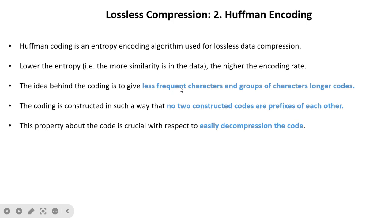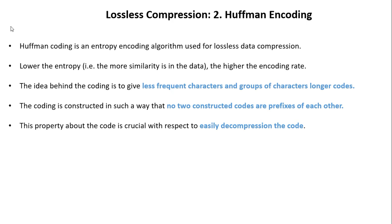The second technique is Huffman encoding, which tries to reduce the coding redundancy present in data. It is basically a variable length encoding. Huffman encoding is an entropy encoding algorithm used for data compression. Entropy is very important to understand from the compression point of view, because based on the entropy measure we can identify whether an image contains coding redundancy or interpixel redundancy.